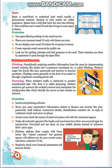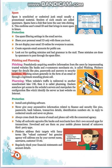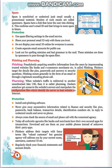Phishing and Pharming: Phishing is fraudulently acquiring sensitive information from users by impersonating trusted websites like banks and e-commerce merchants. Phishers target details like PINs, passwords and answers to security questions. Phishing occurs generally in the form of an email or through a legitimate-sounding phone call. Pharming is when a website's traffic is redirected to another unauthorized fake URL. Hackers get access to the website's servers and manipulate the configuration files which identify the server as the host website on the Internet.